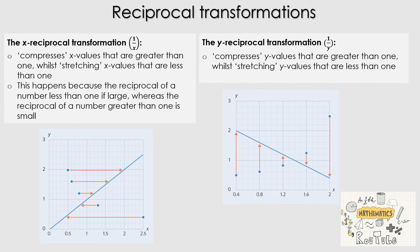The final transformation for today is the reciprocal transformation. The X reciprocal transformation is just one over X — the reciprocal means flipping the numerator and denominator. How it works: it compresses the X values that are greater than one while stretching X values that are less than one. It's going to bring some values to the right and bring others to the left, making our data linear. The Y reciprocal transformation — one divided by Y — compresses the Y values that are greater than one while stretching Y values that are less than one. Values on the left-hand side are brought up and others are brought down, and once again the main objective is to linearise your data.